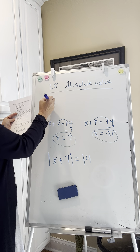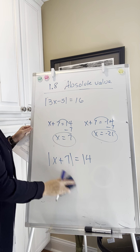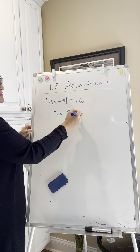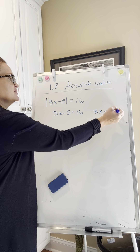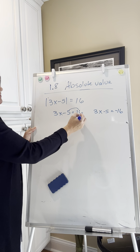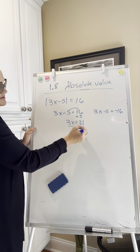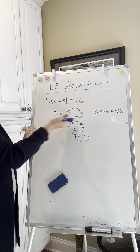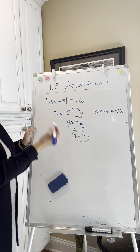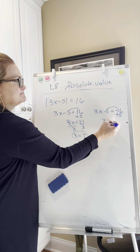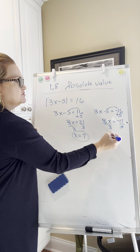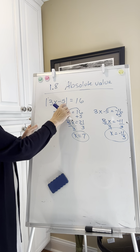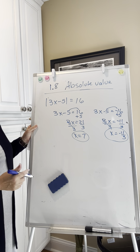Here's another one to try: absolute value of 3x minus 5 equals 16. You want to say what makes 3x minus 5 equal 16, as well as what makes 3x minus 5 equal negative 16. This is going to require a little more algebra. We solve through that and get x equals 7: 3 times 7 is 21, 21 minus 5 is 16, and the absolute value of 16 is 16 — one answer. Then for the negative 16 case, we get a fraction — negative 11 thirds. Those are a little harder to check, but use your calculator: 3 times negative 11 thirds minus 5 should be negative 16, whose absolute value is 16. Two solutions.